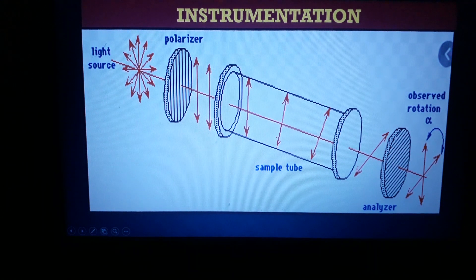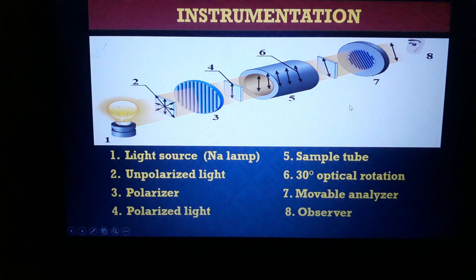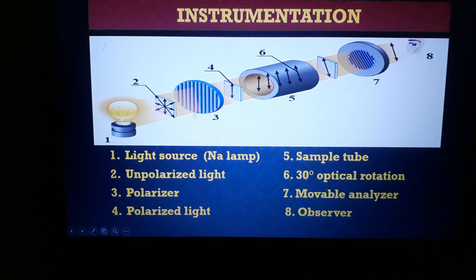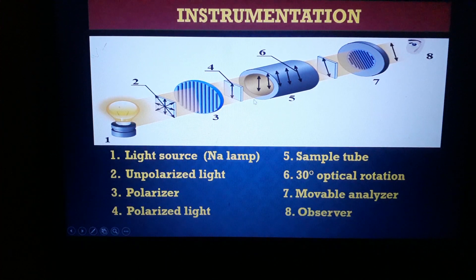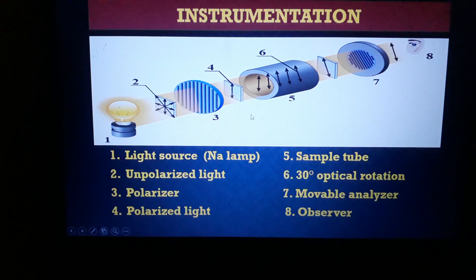The rotation caused by the sample can be measured as an angle using an analyzer — either left-side or right-side rotation. As shown in the diagram: unpolarized light enters the polarizer, becomes a single plane of polarized light, then passes through the sample solution containing the optically active substance, which rotates the plane of light left or right, and the analyzer measures the angle of rotation.